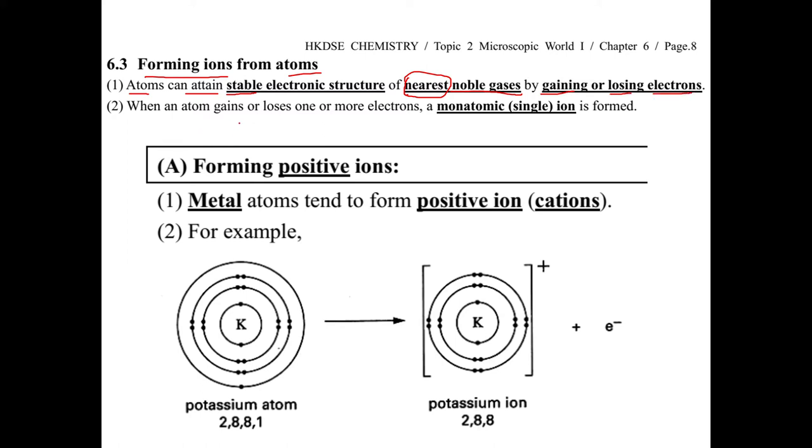After gaining electrons, it will become negative ions. For losing electrons, it may become positive ions. And the ions may be positive or negative. We say also an atom with a monoatomic or single ion.